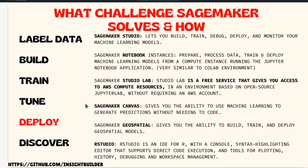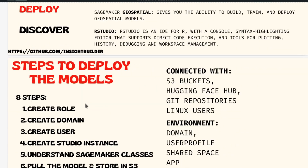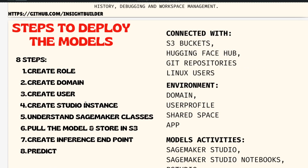I'll be walking you through the steps you need to take. These are the eight steps: creating a role, domain, creating the user, creating the instance, understanding the SageMaker classes, pulling the model in and storing it in an S3 bucket, and creating an inference endpoint and predicting.